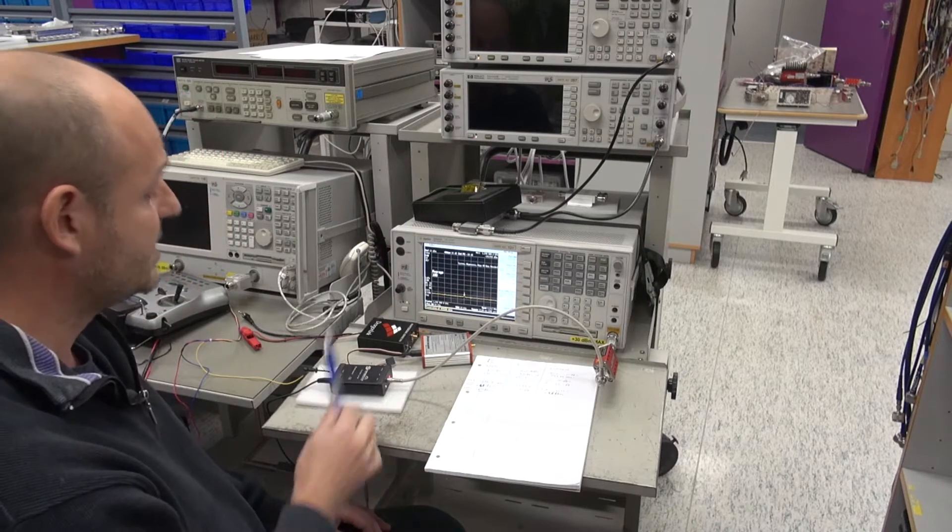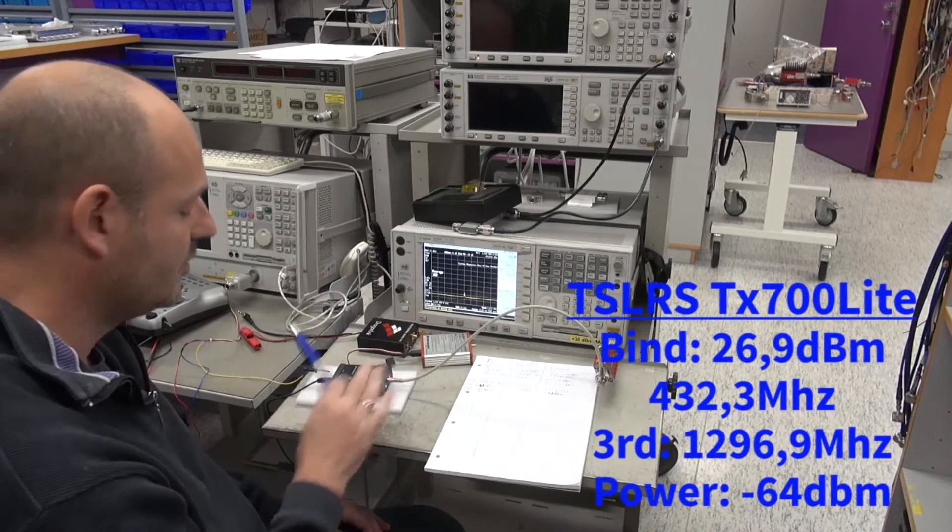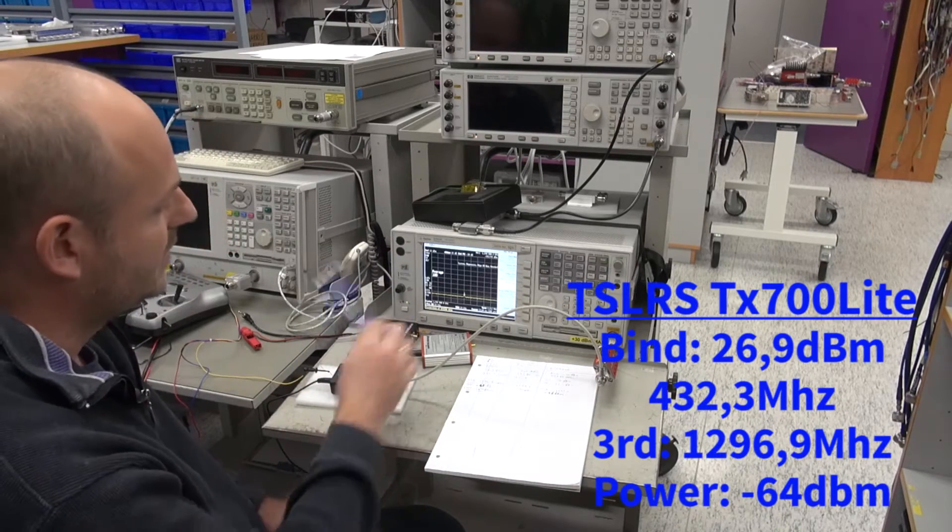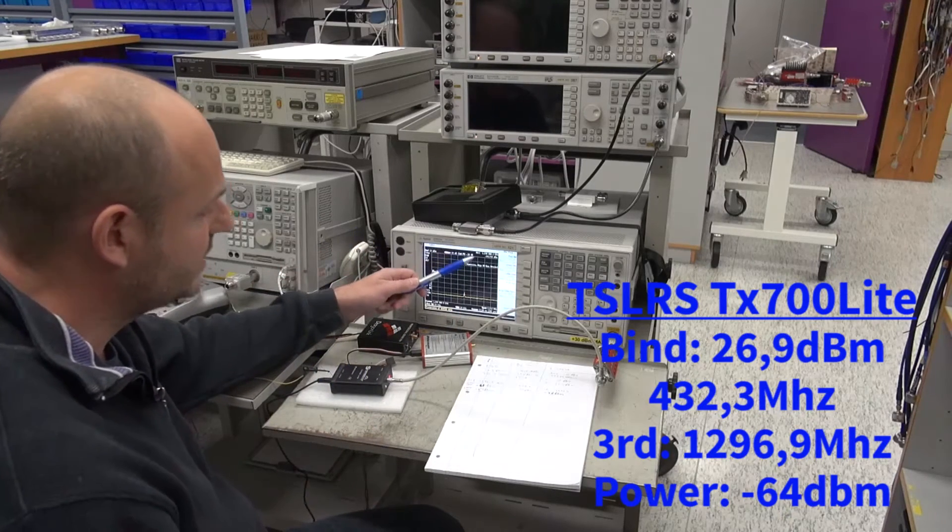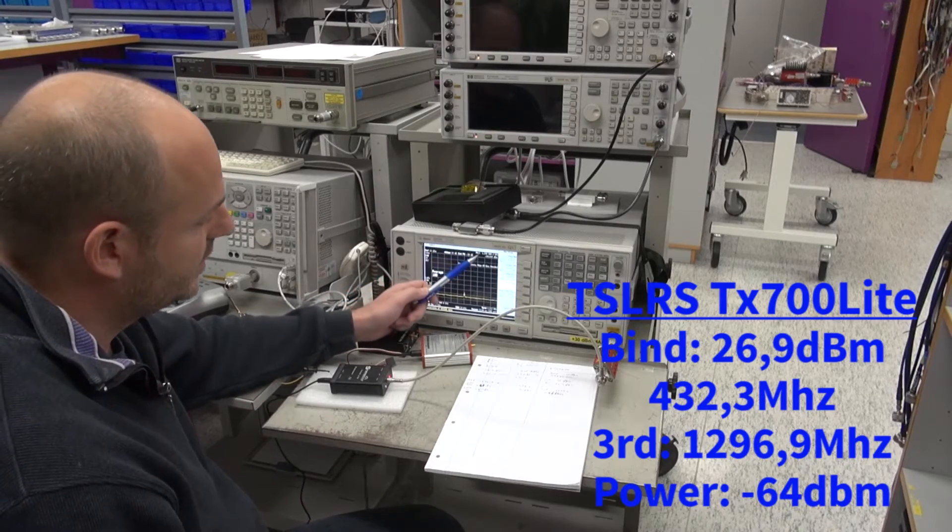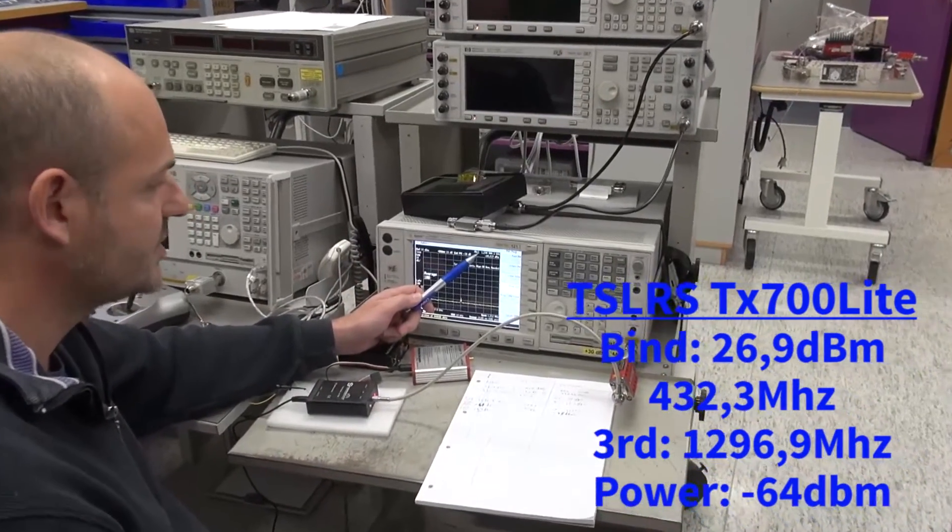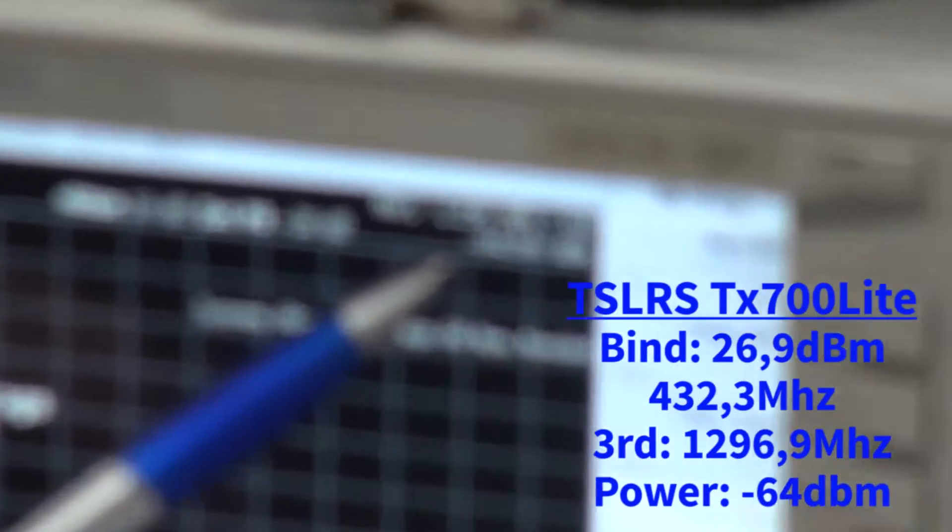First we're going to test the Shara UHF system. I already set it into band and zoomed in on the third harmonics. What you can see right now is the harmonic level on the third, the 1296 megahertz, is minus 64 to 65 dBm.